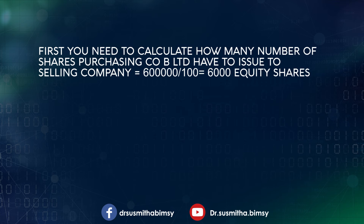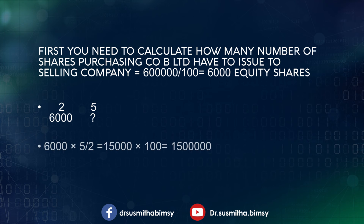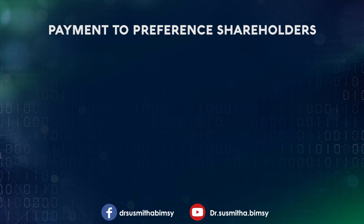We need to find out the number of shares the purchasing company will issue. Looking at the balance sheet liability side: equity share capital is ₹6 lakh at ₹100 each, so 6 lakh divided by 100 equals 6,000 equity shares in the selling company. For every two shares of the selling company, the purchasing company decided to issue five shares. Since the selling company has 6,000 shares, we can easily find out the number of new shares by cross multiplying: 6,000 × 5 ÷ 2 = 15,000 equity shares.